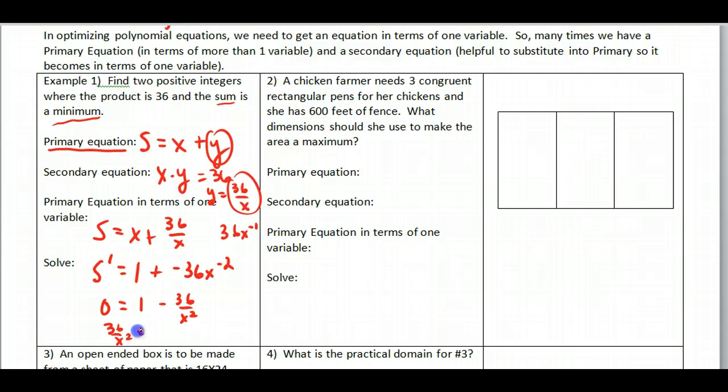And so when we set this equal to 0 and solve this, if you go ahead and do this, bring the, I like to just make these, set these equal to each other. As you can see, then x squared is equal to 36, so x is equal to plus or minus 6.